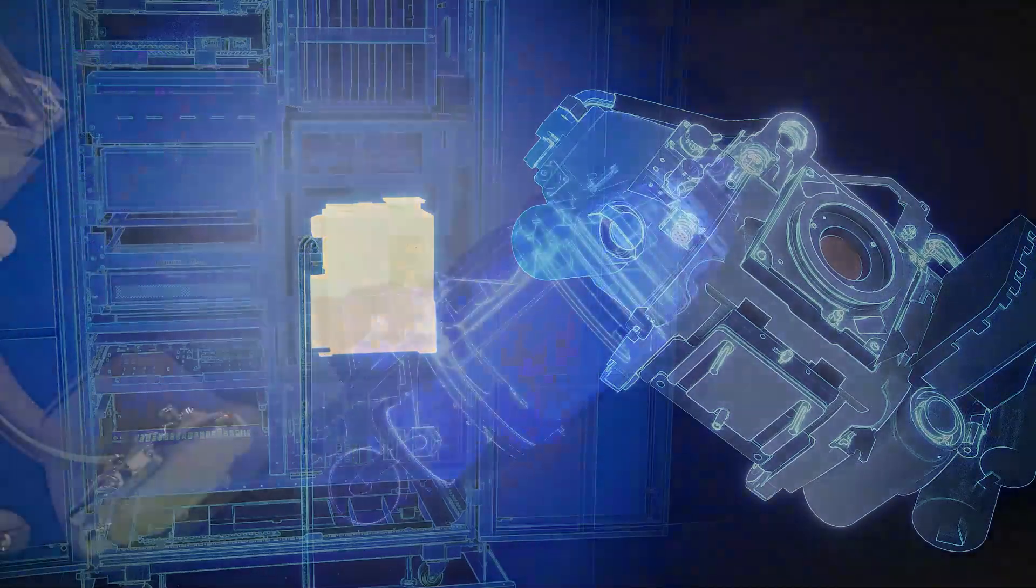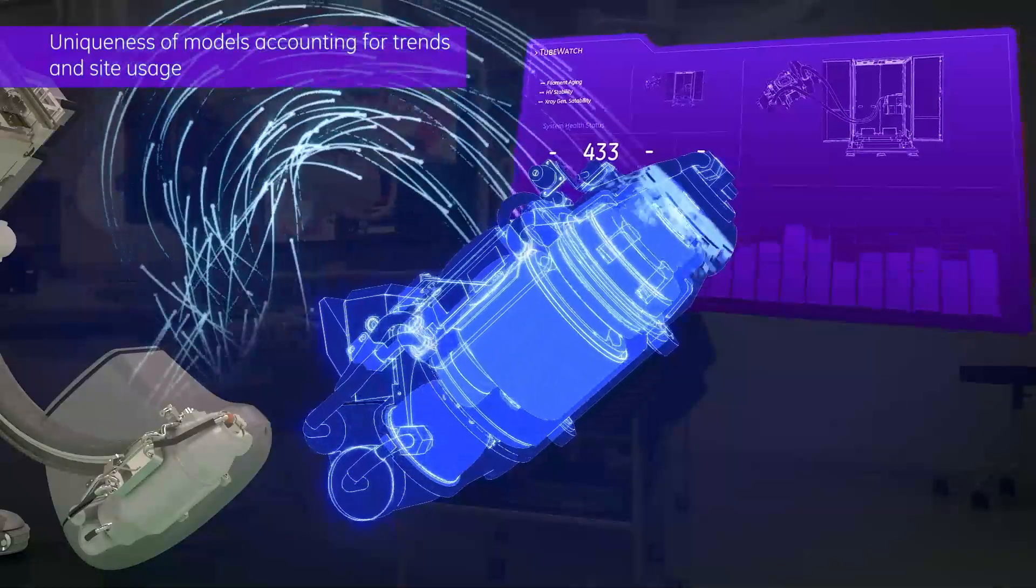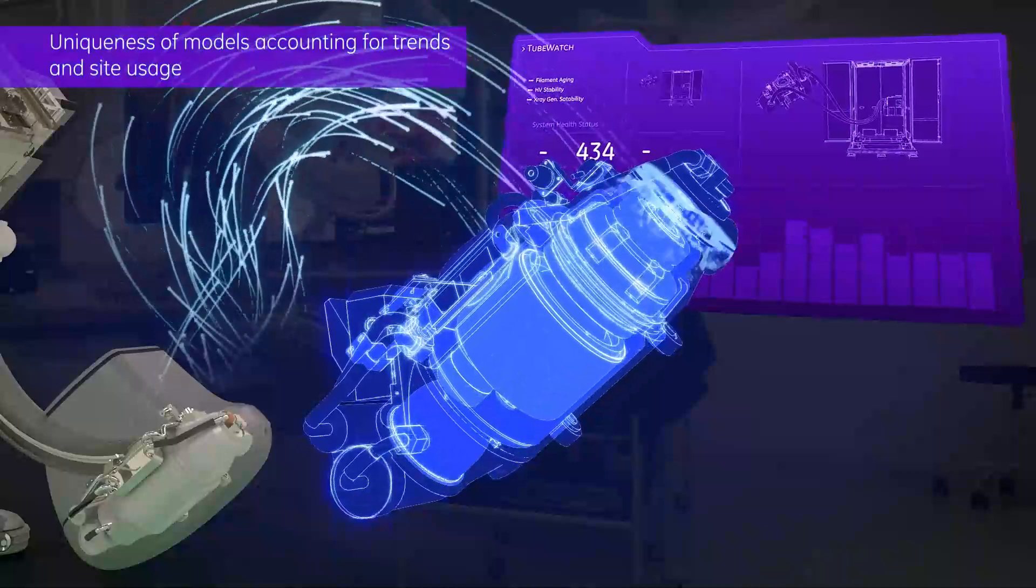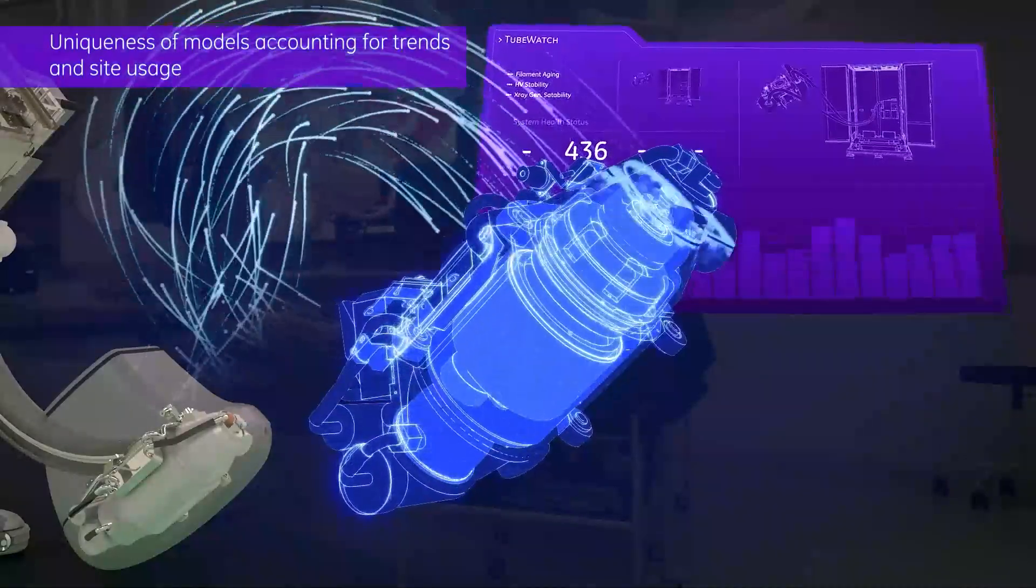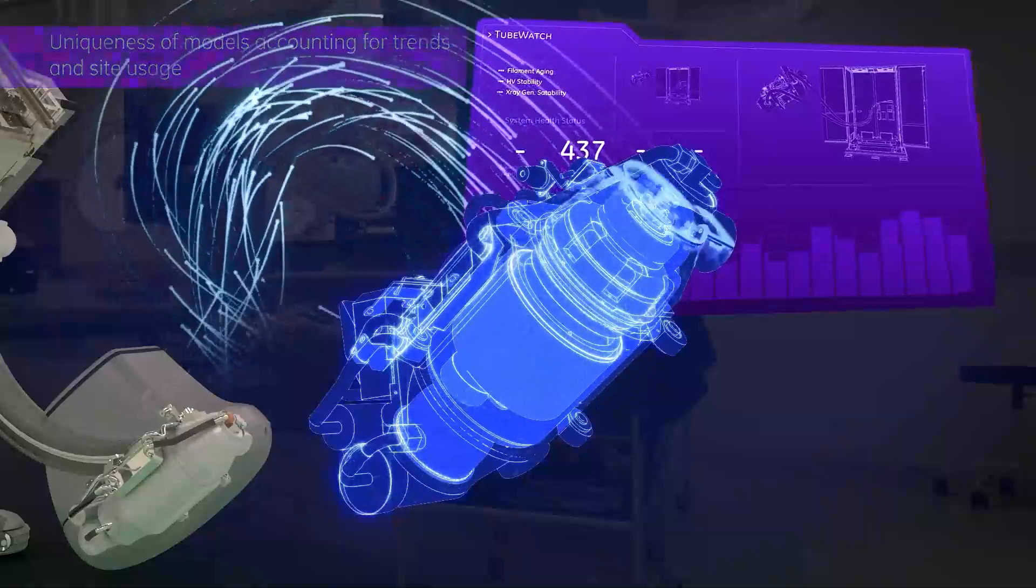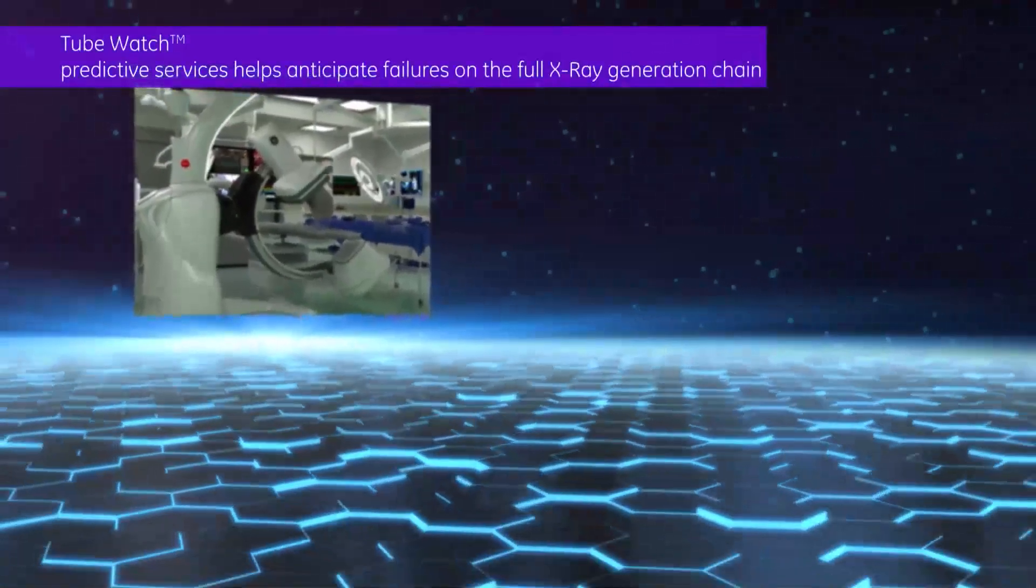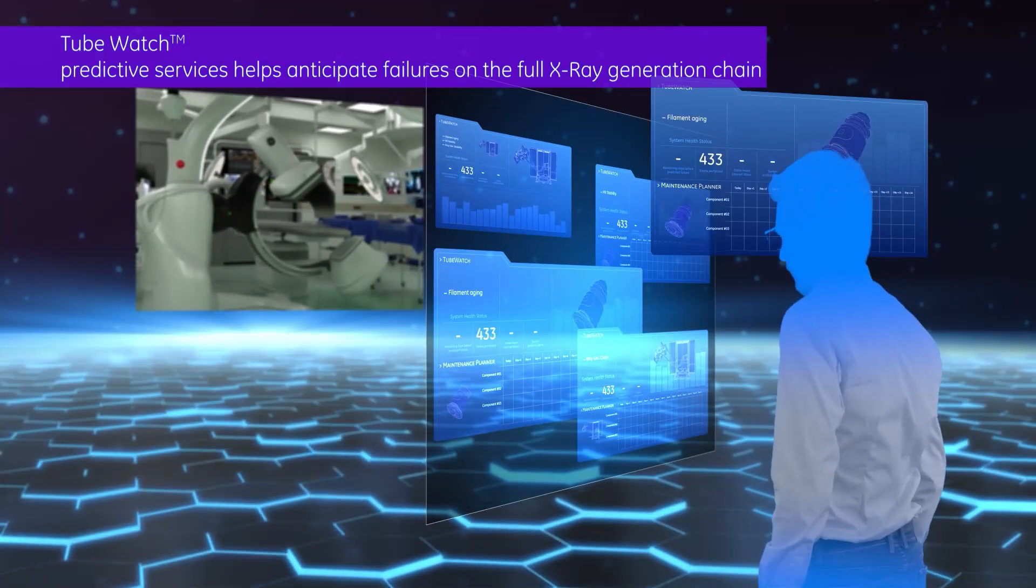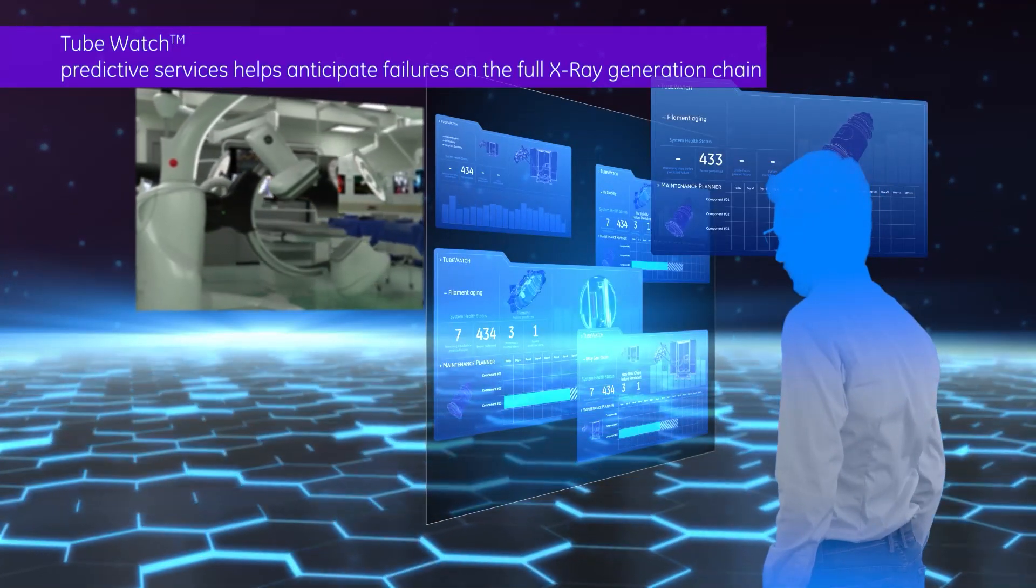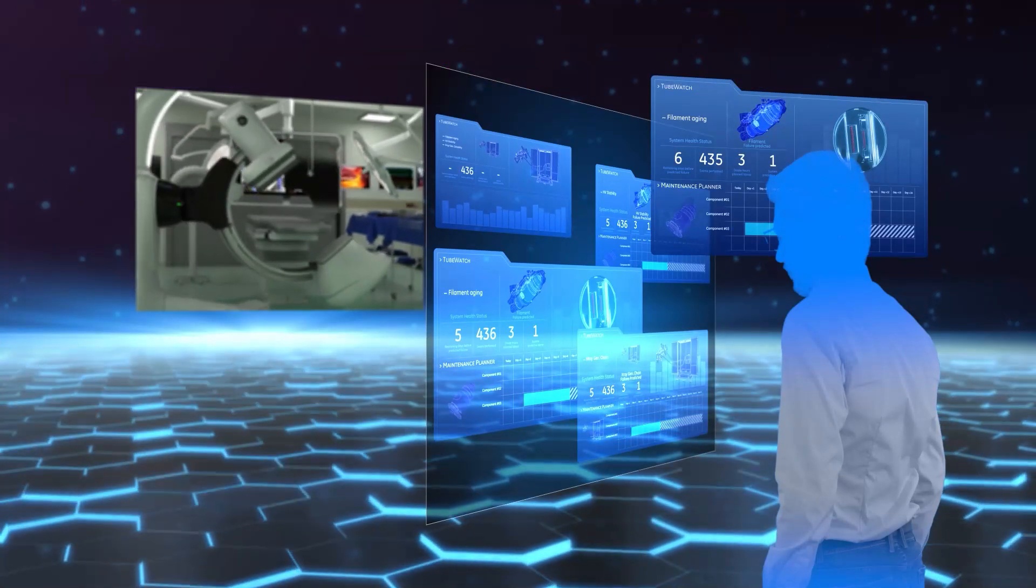The unique design of the model accounts for trends and site usage profiles to help anticipate tube failures or issues in the x-ray generation chain before they occur, reducing potential unplanned downtime. TubeWatch for IGS is designed so that if the algorithm detects a potential failure on the x-ray generation chain, an automated alert is transferred to the GE Healthcare remote engineer so they can take necessary action to help prevent unplanned downtime.